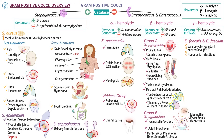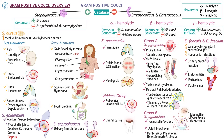Enterococci are commonly associated with urinary tract infections as well as endocarditis, peritonitis, and bacteremia. Streptococcus bovis, which is also gamma-hemolytic but cannot thrive in high salt concentrations, causes similar illnesses as Enterococcus and is also associated with colorectal cancer.